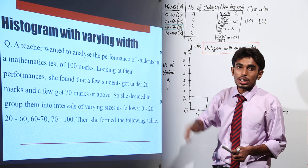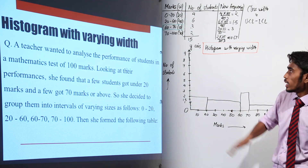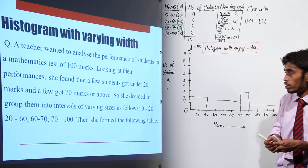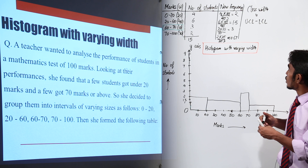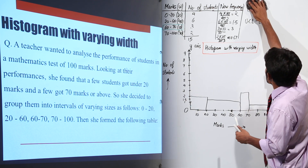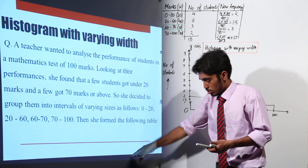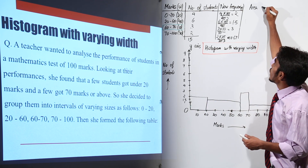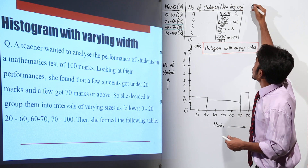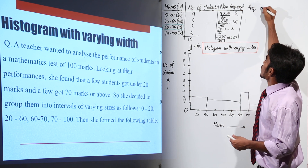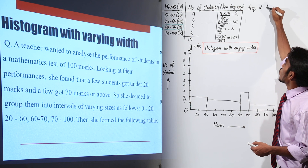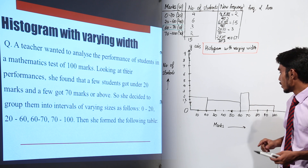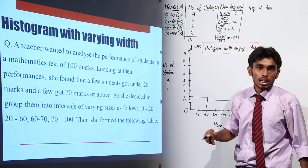When the width of the class interval does not remain the same, we draw this kind of histogram. Now let us try to make some inferences or observations from this table. We know that frequency is directly proportional to the area of the rectangle. The last time we compared the last two class intervals, so this time also we will be comparing the last two class intervals.